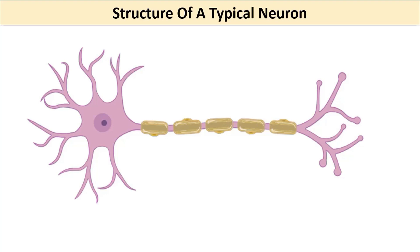First of all, neurons are cells, so the structure of neurons has a cell body containing a nucleus and ribosomes. These carry the genetic information and machinery of protein synthesis for different cellular operations, energy production, metabolism, and many other functions.